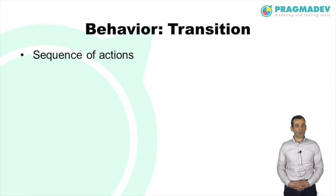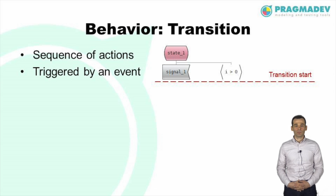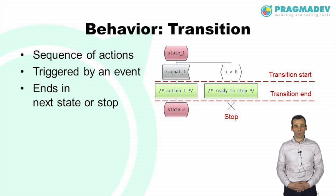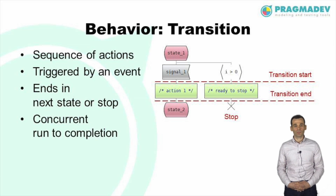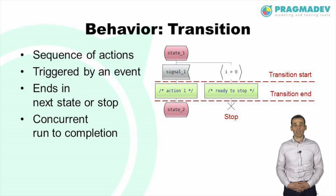A transition performs a sequence of actions. During a transition, the data of a process may be manipulated and messages may be sent. An event marks the entry point of a transition — this event can be a message input, priority input, or continuous signal. The transition will end with a next state or a stop. When a stop is reached the process will terminate, and all messages in its input queue or saved messages will be discarded. A transition in one process can be executed at the same time as a transition in another process, provided that both processes run concurrently. If processes run sequentially, then their corresponding transitions are executed interleaving — only one transition is executed at a time until it reaches the next state or stop.